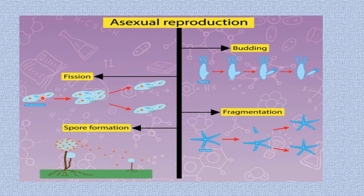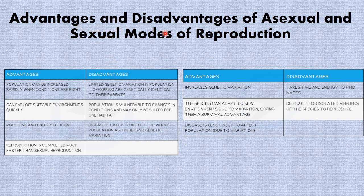Moving along, we'll talk about the advantages and disadvantages of the sexual and asexual modes of reproduction. Starting with asexual reproduction — the advantages are: the population can be increased rapidly where conditions are right; it can exploit suitable environments quickly; it is time and energy efficient; and reproduction is completed much faster than sexual reproduction. The disadvantages are: offspring are genetically identical to their parents due to limited genetic variation; the population is vulnerable to changes in conditions and may only be suited for one habitat; and disease is likely to affect the whole population as there is no genetic variation.